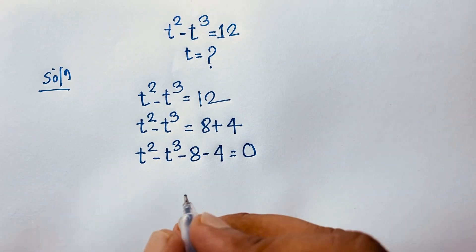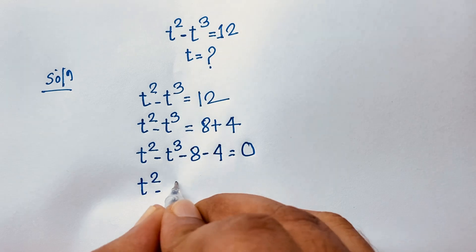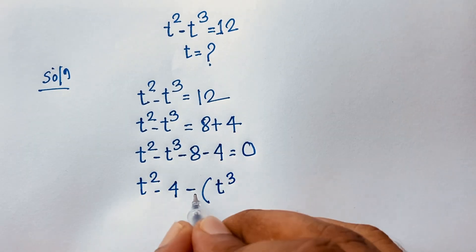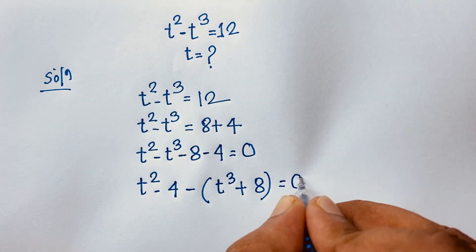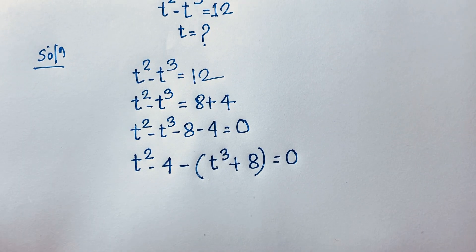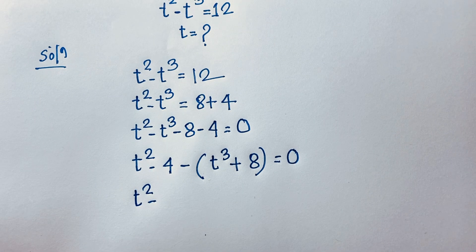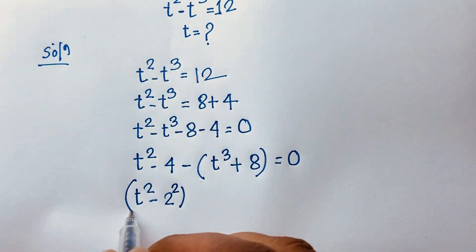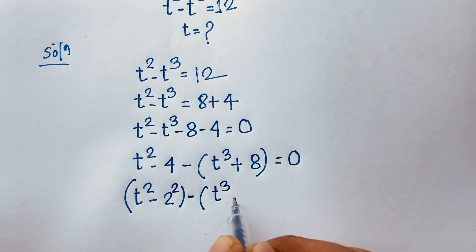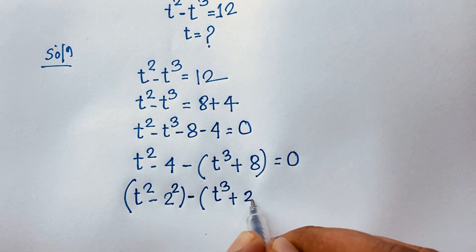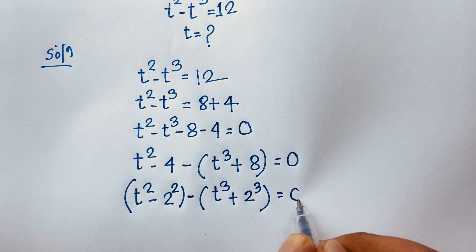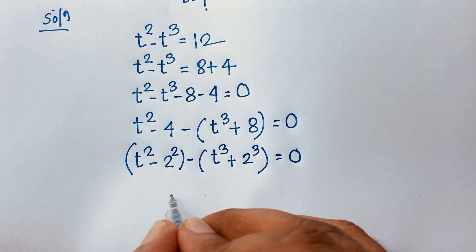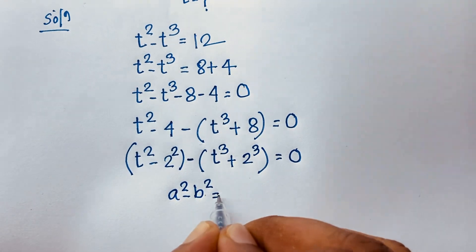Now, you can see here t to the power 2 and this negative 4, and if I take the negative sign as common, it will be t to the power 3, then minus minus it will be plus 8, equal to 0. Now, t to the power 2 minus 4, it will be 2 to the power 2 in bracket — and minus t to the power 3. And this 8 it will be 2 to the power 3, equal to 0.